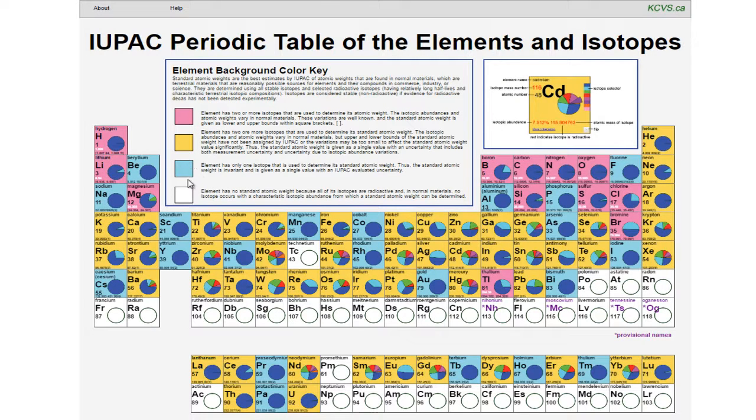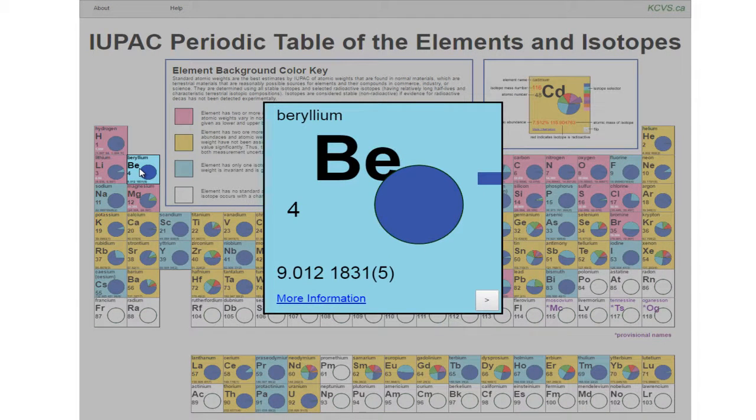Blue is the background color for an element if only one isotope is used to determine its standard atomic weight. The standard atomic weight is invariant and is given as a single value with an IUPAC evaluated measurement uncertainty.